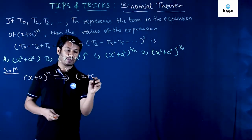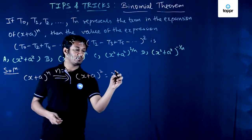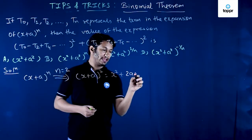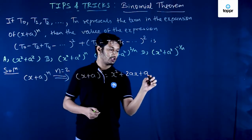So in that case we have (x+a)^2 and this will become x^2 + 2ax + a^2.